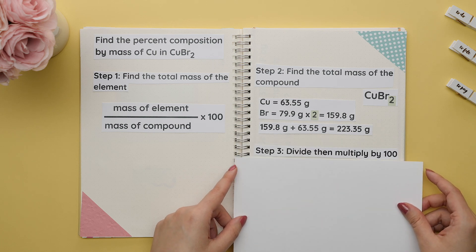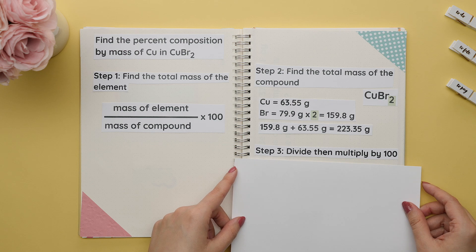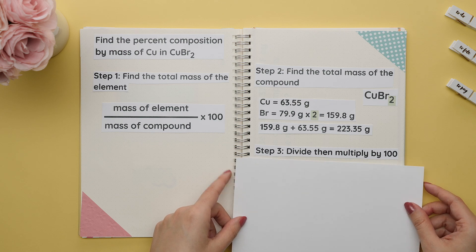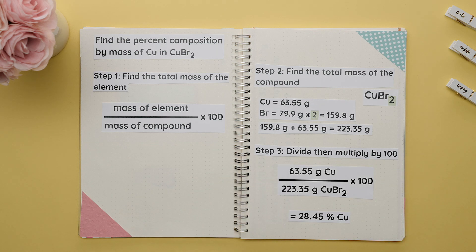Step three is to divide, then multiply by 100 to get our percent composition of copper. Not too bad, right?